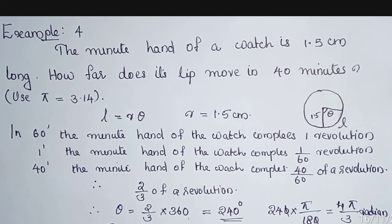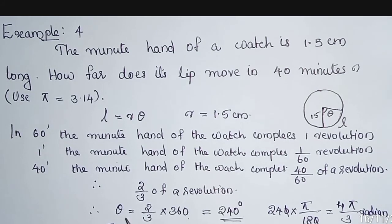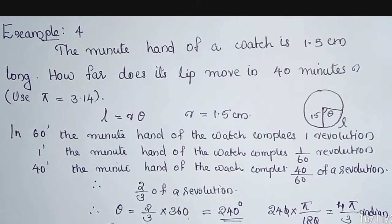240 × π/180 = 4π/3 radians. 240 degrees is equal to 4π/3 radians. Then, substituting the value of θ and r in this equation, l = rθ.